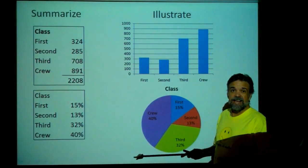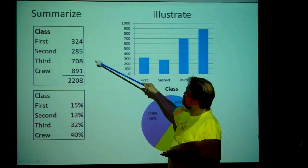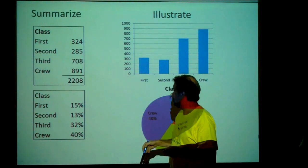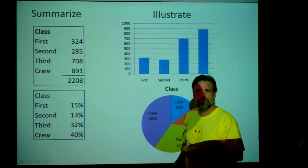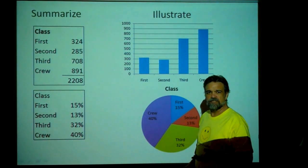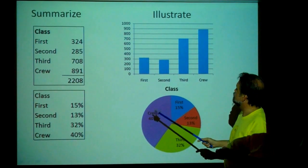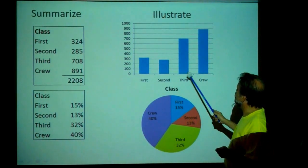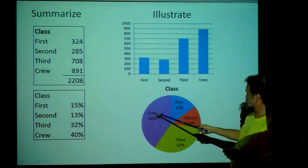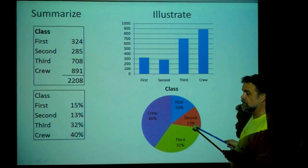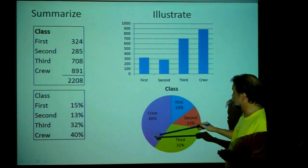Another thing we might be interested in is the class passengers were traveling in: first class, second class, third class, and crew. From the relative frequency table, 40% of the people were crew, meaning only 60% were passengers. From the bar chart, the biggest group was crew, the smallest was second class. Adding crew and third class together, that's almost three-quarters of the boat.